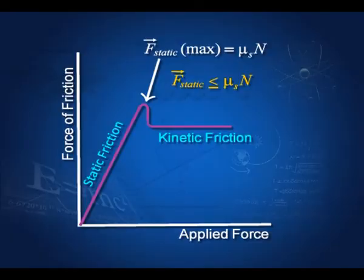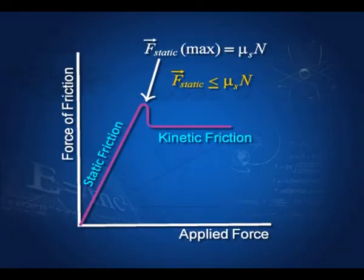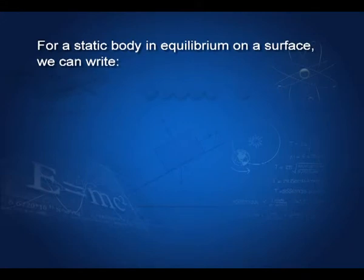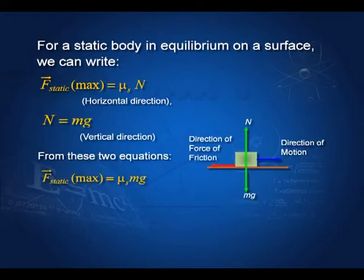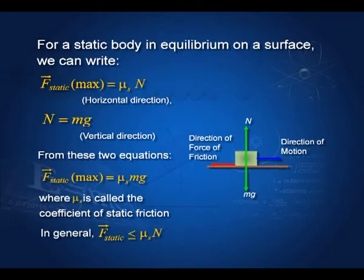Beyond the point where friction can no longer prevent motion, this is called the force of static friction. The maximum force required just before the body moves is the maximum static friction, given by μₛN, where N is the normal reaction. For a static body in equilibrium on a surface, F_static(max) = μₛN = μₛmg. The force of friction is always less than or equal to μₛmg.